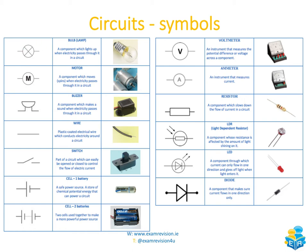For the lamp symbol, imagine looking down on top of a bulb — it's a circular shape with two lines through it in an X shape. A buzzer looks like a bell shape pressed down. A wire is represented by a straight line. A switch is a line that opens and closes. A battery has one longer and one shorter line. A voltmeter is labelled V, an ammeter is labelled A, and a resistor is shown as a rectangle resembling the physical component.